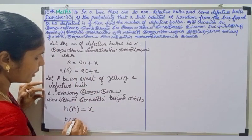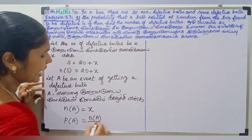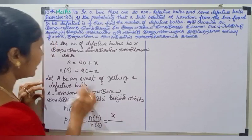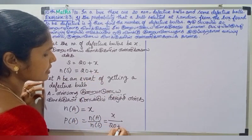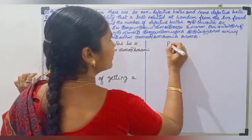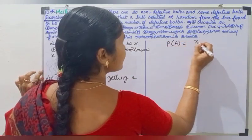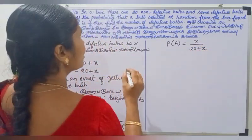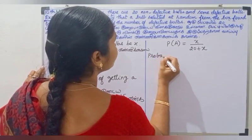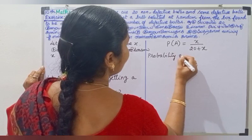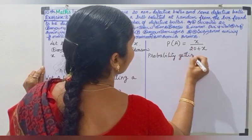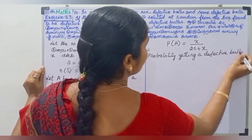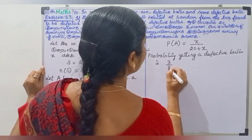Now we will calculate P of A. P of A equals n of A by n of S, which is x by 20 plus x. But the question says the probability of getting a defective ball is 3 by 8.